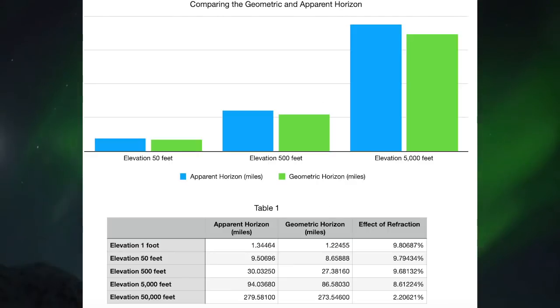To evaluate the error rate of the Al-Biruni method, what I did was I went to Walter Bisland's Advanced Earth Curve Calculator and took several observer heights: one foot, 50 feet, 500 feet, 5,000 feet, and then 50,000 feet, and calculated what the error in the distance to the horizon would be versus the geometric horizon.